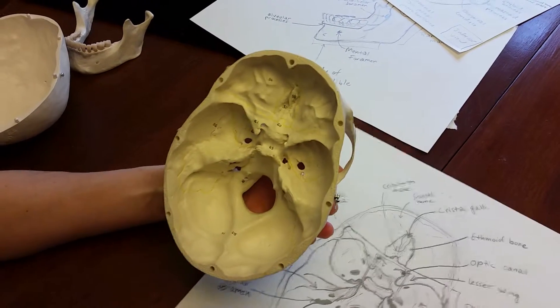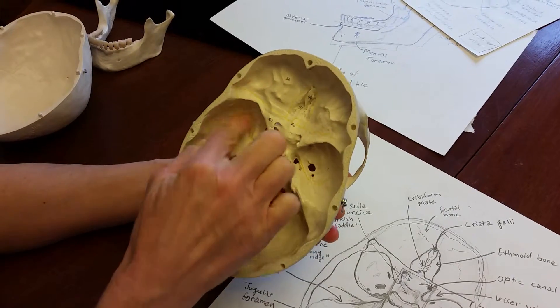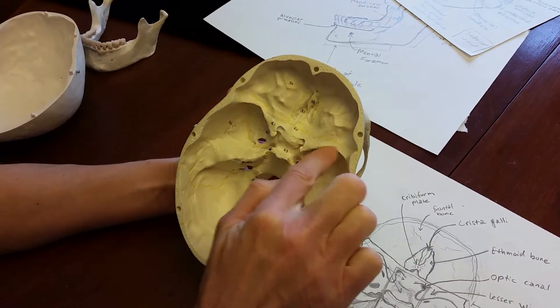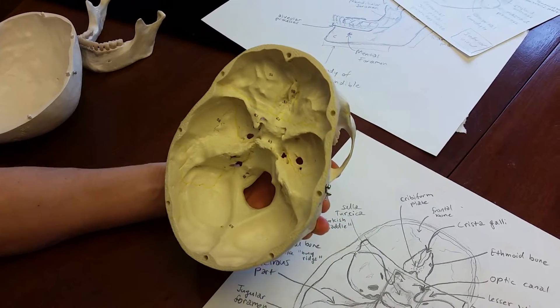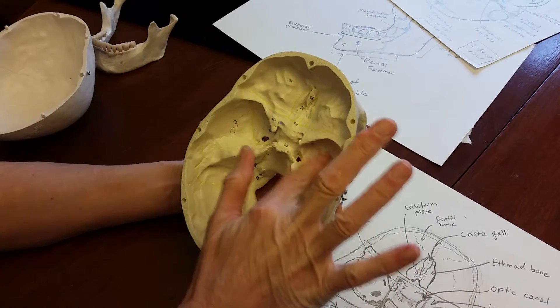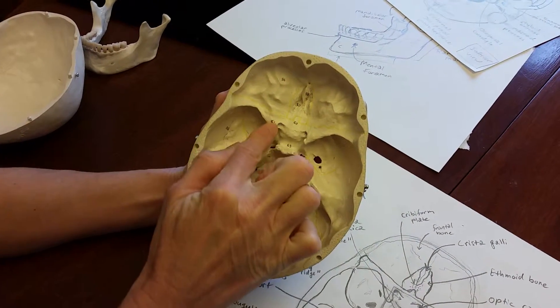Next, let's look at the sphenoid bone. The sphenoid bone is this bone right here. It looks like a batwing. Some people will say it's a batwing shape. We can divide the sphenoid bone into two major features: the greater wing and the lesser wing. The lesser wing is this part right here.